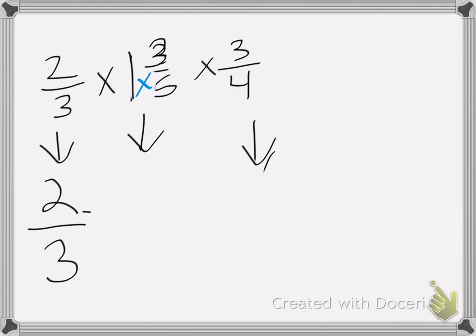1 times 5 is 5, plus 3 is 8. So it's going to be 8 fifths, and then 3 fourths stays the same. And we're going to multiply those.